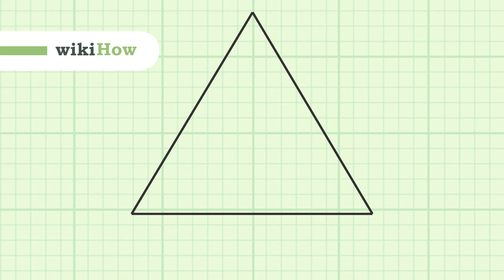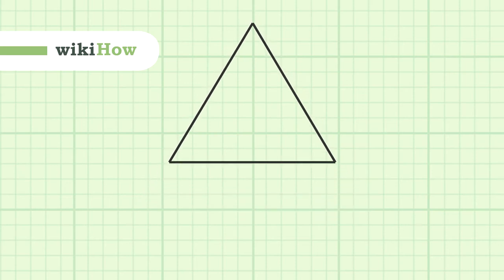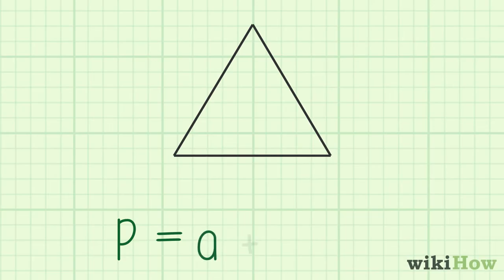To find the perimeter of a triangle, use the formula perimeter equals A plus B plus C, where A and B and C are the lengths of the sides of the triangle.